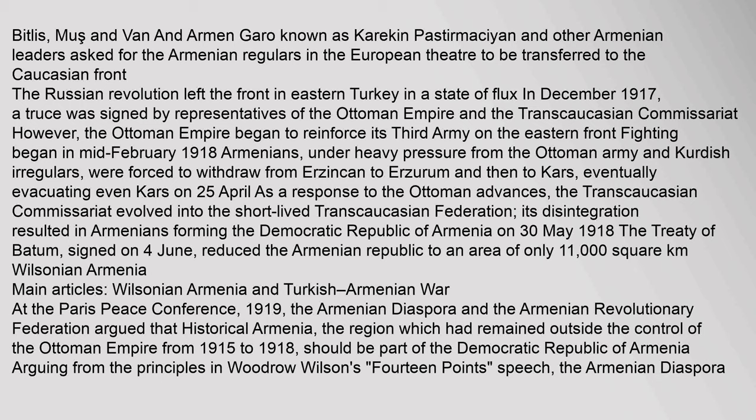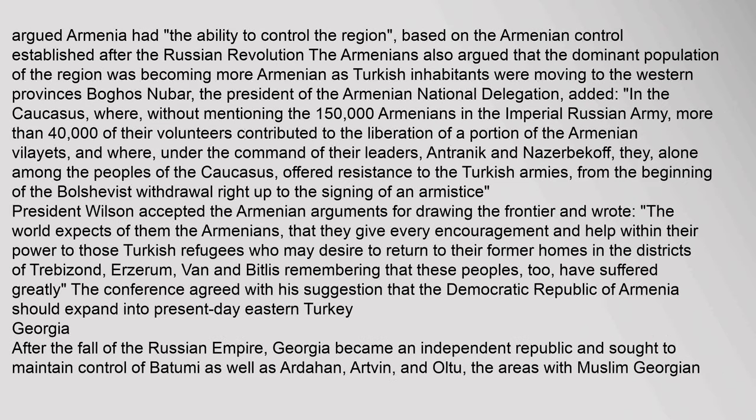Wilsonian Armenia: At the Paris Peace Conference of 1919, the Armenian Diaspora and the Armenian Revolutionary Federation argued that historical Armenia — the region which had remained outside the control of the Ottoman Empire from 1915 to 1918 — should be part of the Democratic Republic of Armenia. Arguing from the principles in Woodrow Wilson's speech, the Armenian Diaspora argued Armenia had the ability to control the region based on the Armenian control established after the Russian Revolution. The Armenians also argued that the dominant population of the region was becoming more Armenian as Turkish inhabitants were moving to the western provinces. Boghos Nubar, the president of the Armenian national delegation, noted that more than 40,000 of their volunteers contributed to the liberation of a portion of the Armenian vilayets, and that under the command of their leaders, Antronik and Nazarbikov, they, alone among the peoples of the Caucasus, offered resistance to the Turkish armies from the beginning of the Bolshevist withdrawal right up to the signing of an armistice.